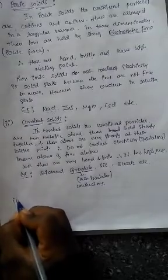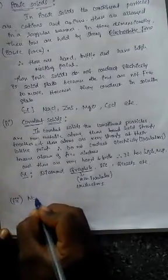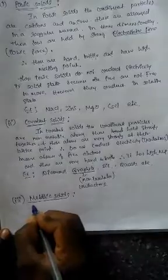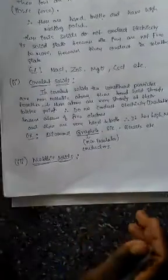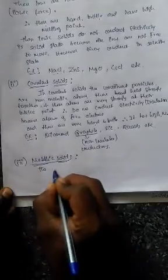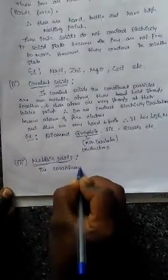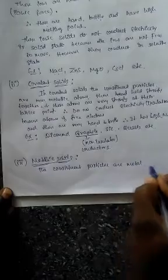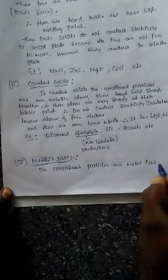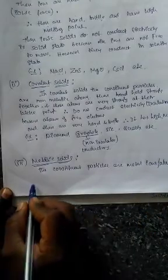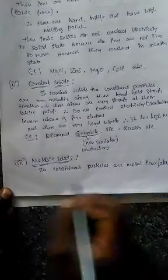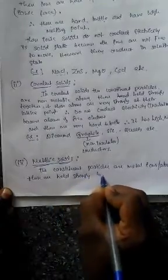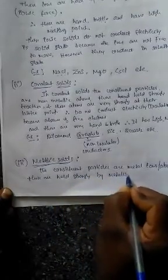The third type of crystalline solid is metallic solid. In metallic solids, the constituent particles are metal ions or atoms, and these are held strongly together by a metallic bond.